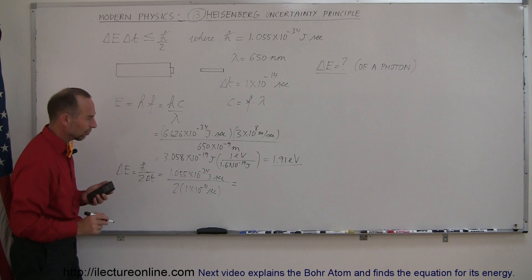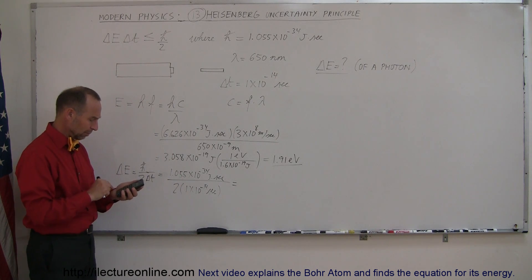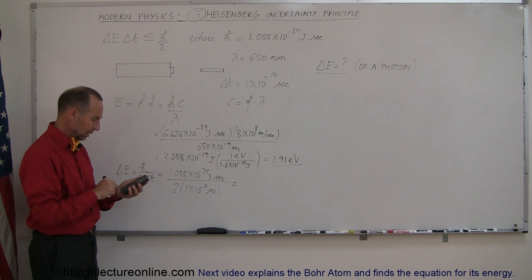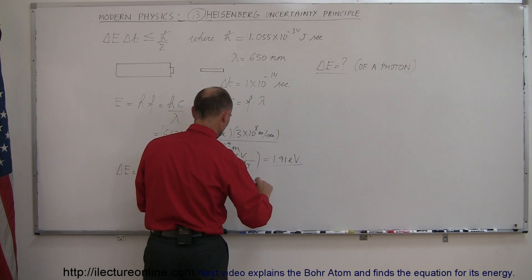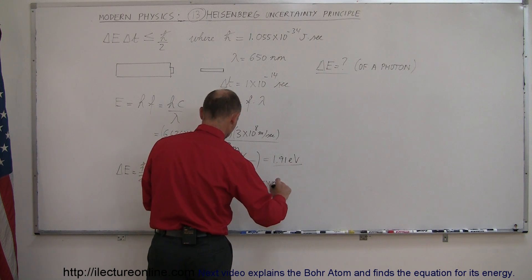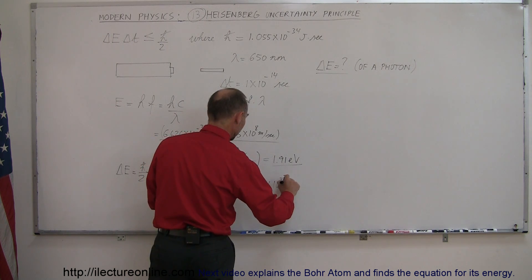And let's see what we get for the uncertainty in the energy. So we have 1.055×10⁻³⁴ divided by two and divided by 1×10⁻¹⁴, and we get 5.275×10⁻²¹ joules.